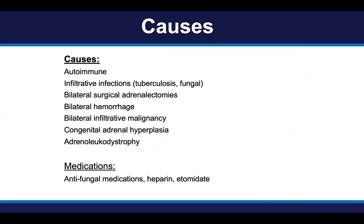What can cause primary adrenal insufficiency? The most common cause is autoimmune, but there are many others: infiltrative infections such as tuberculosis and fungal infections, bilateral surgery to remove the adrenal glands, bilateral hemorrhage, or infiltrative malignancies. Congenital adrenal hyperplasia and adrenal leukodystrophy are also causes. Certain medications — including antifungal medications, heparin, and etomidate — can cause primary adrenal insufficiency as well.